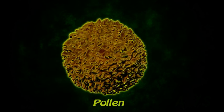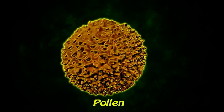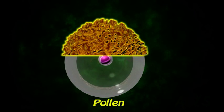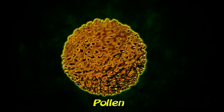When anther splits, pollen grains come out as a yellow powdery substance which has a male gamete inside. Each pollen has a tough outer covering that helps it survive.